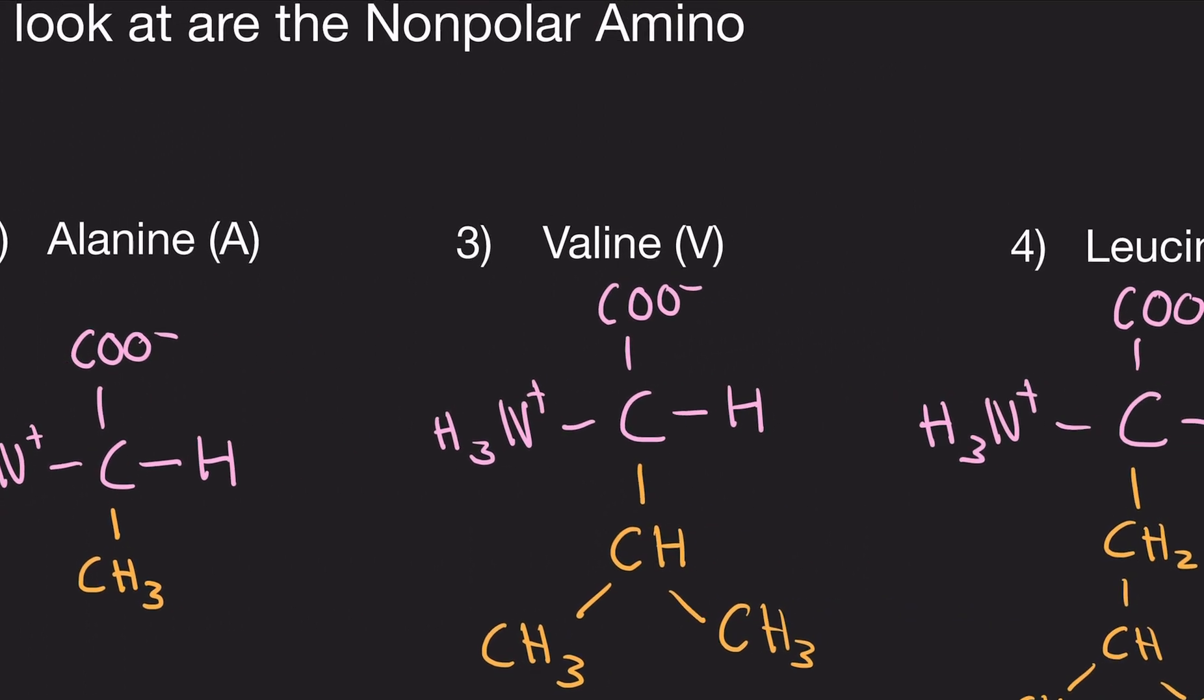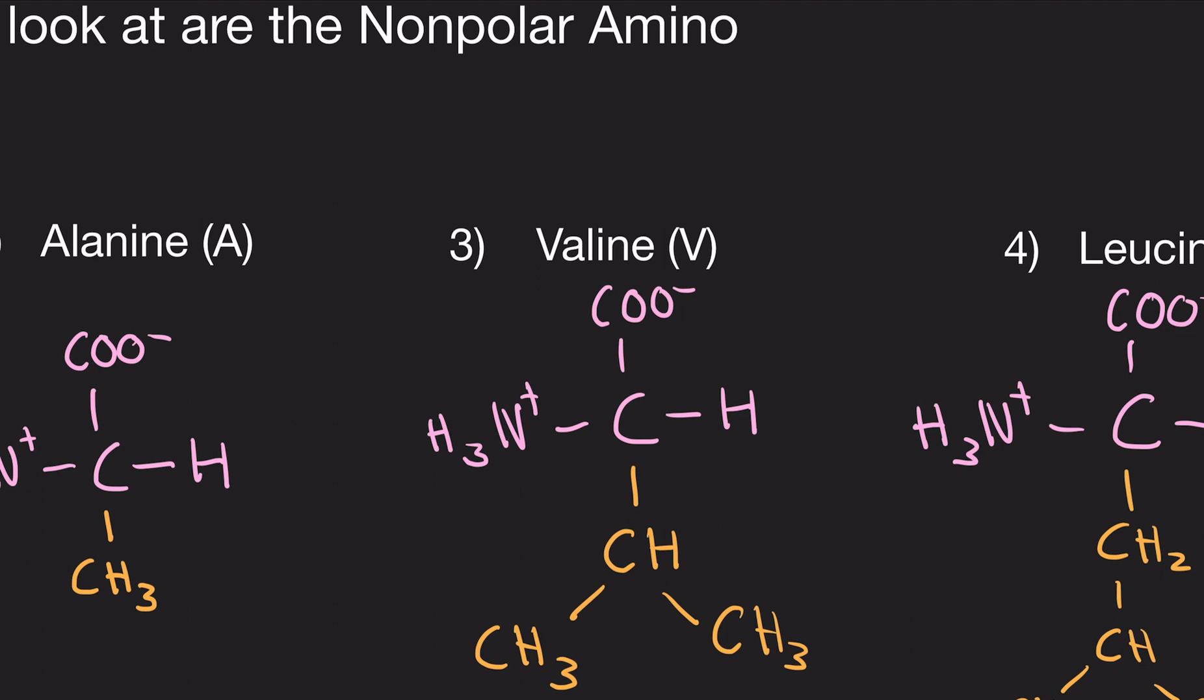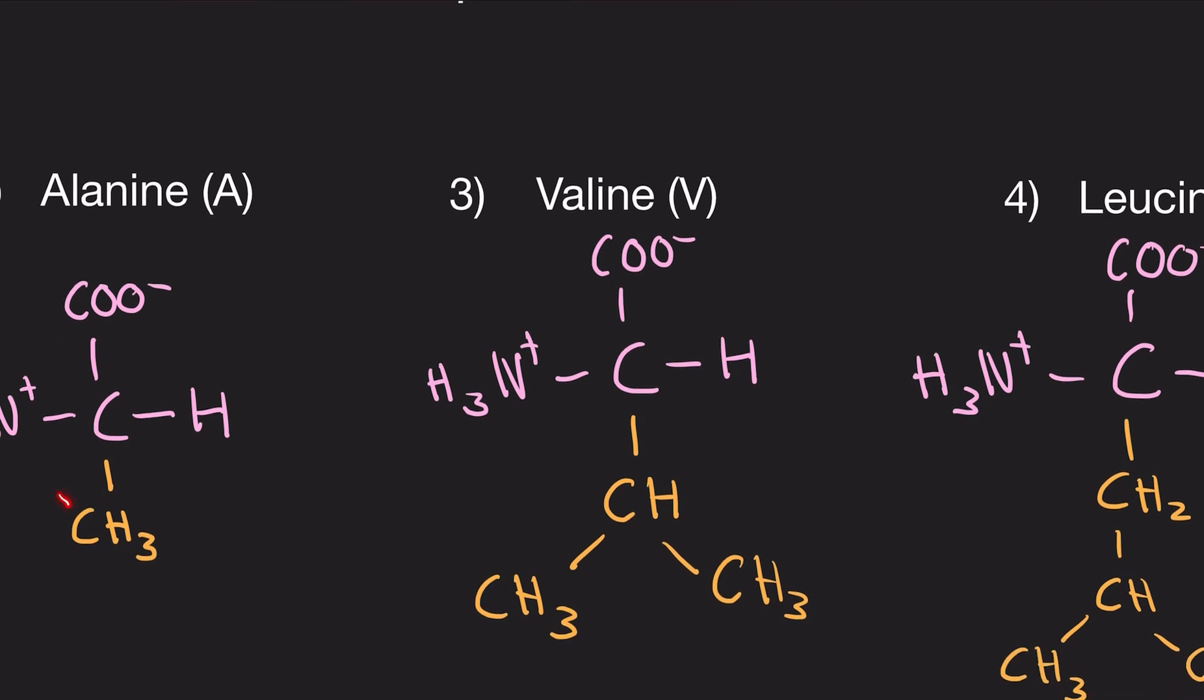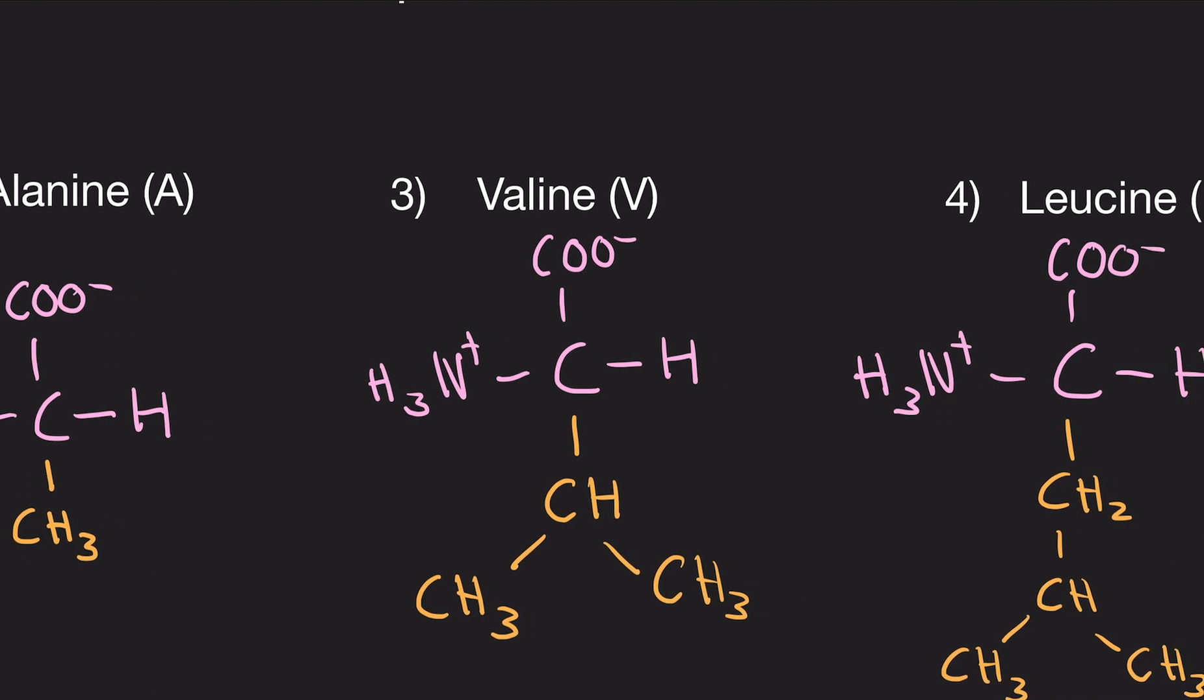Now we have valine with a V. Valine is we take the original methyl group, we leave it on there, and we add a CH and another methyl group to it. So we're adding this part here. That's valine.